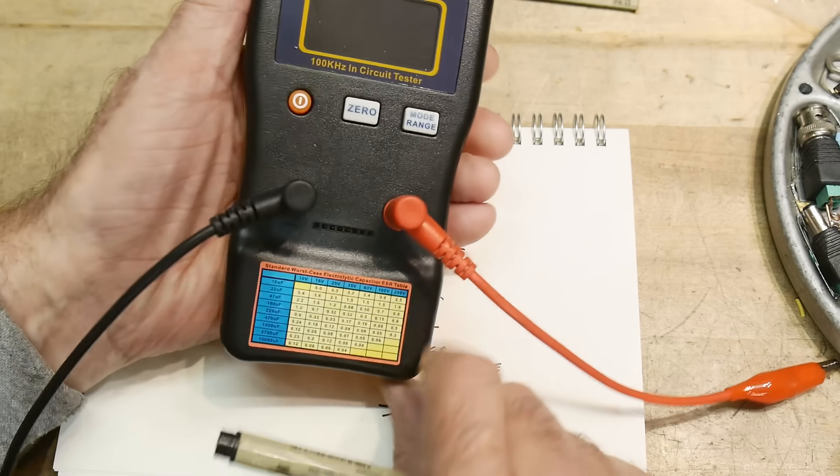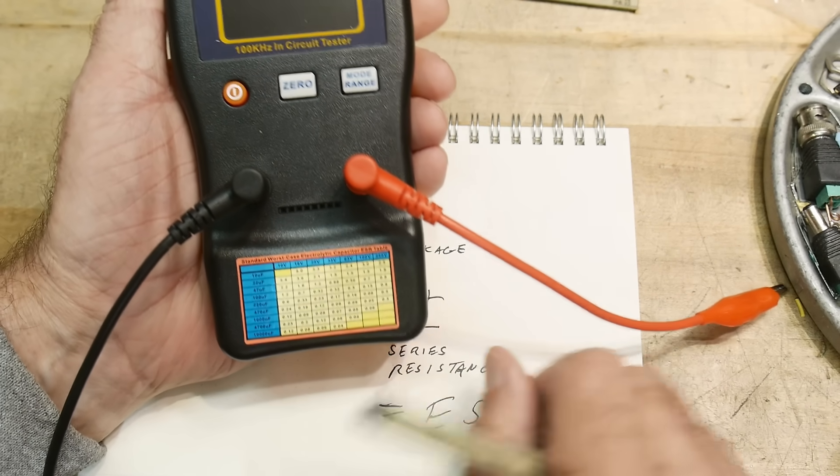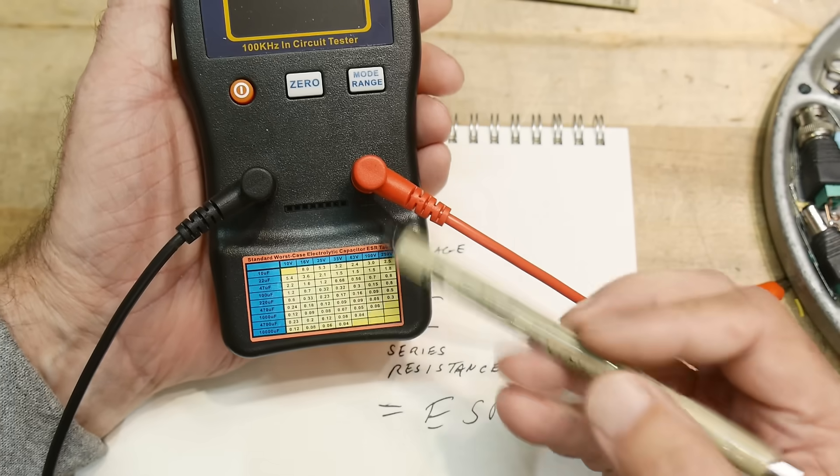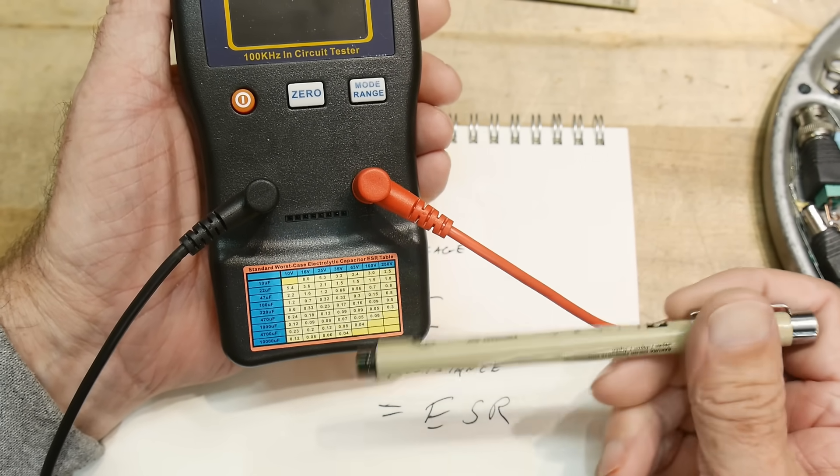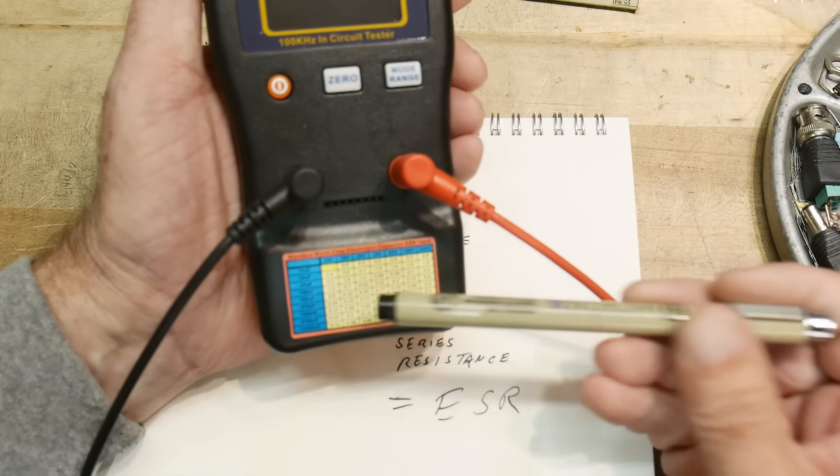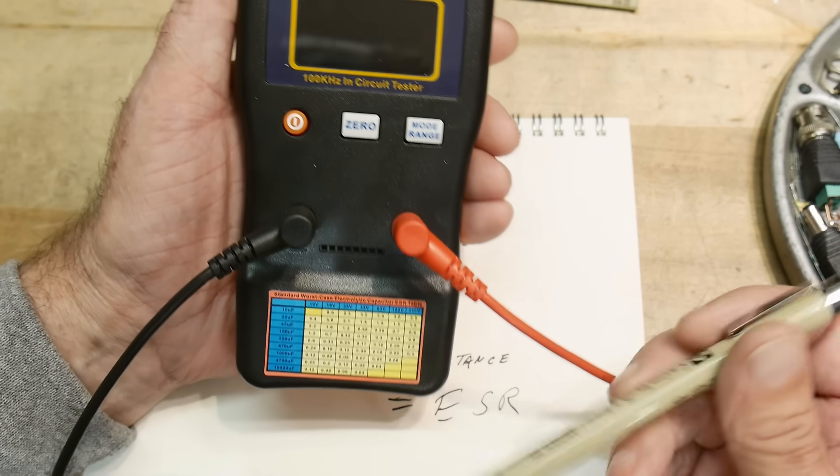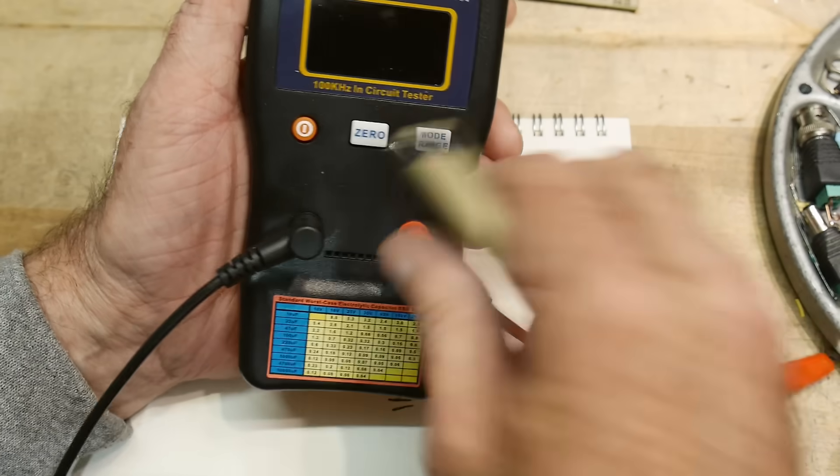There's a little table down here, too small to see on camera right now. But there's a table here that tells you for a given capacitor, what is the acceptable resistance. All capacitors will have some resistance, and this is the acceptable amount. Can't make a perfect capacitor.